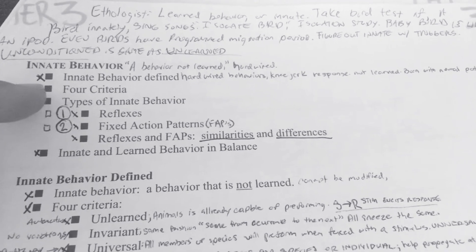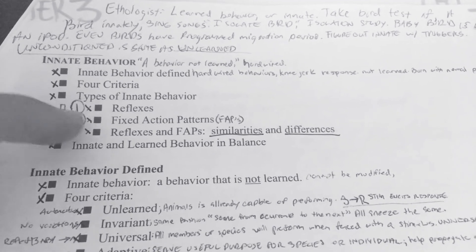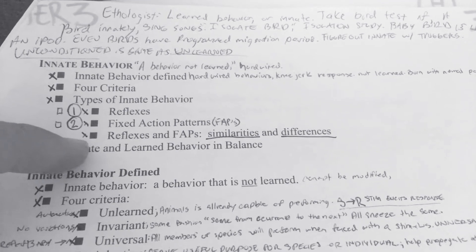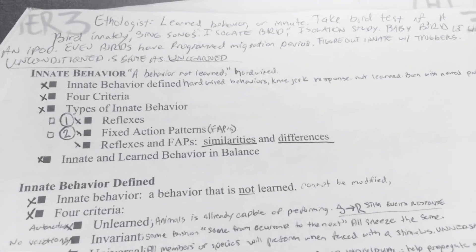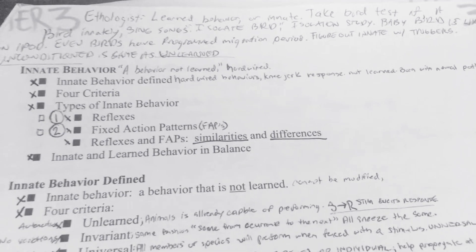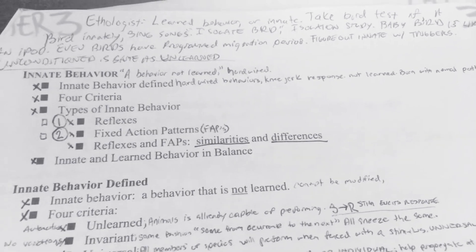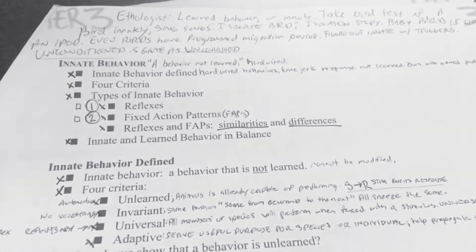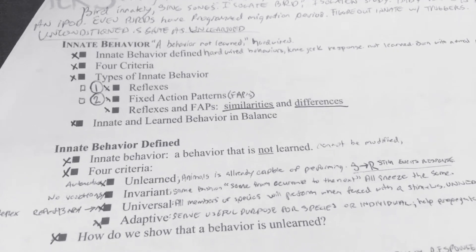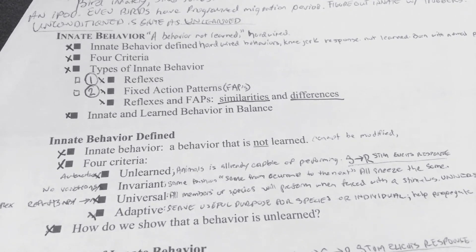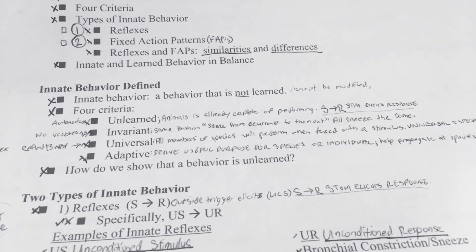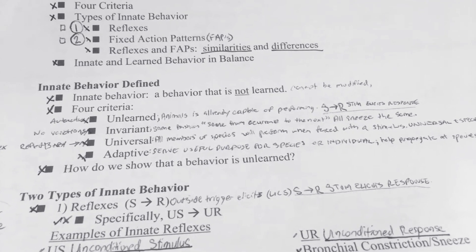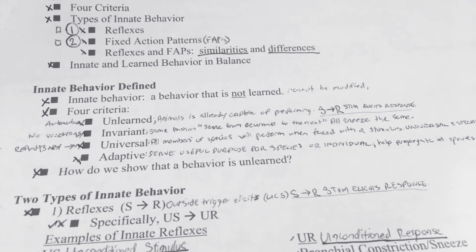The types of innate behaviors are reflexes and fixed action patterns. We need to see the distinctions between reflexes and fixed action patterns — there are similarities and differences which we'll go over. Innate behavior is defined as a behavior that is not learned.